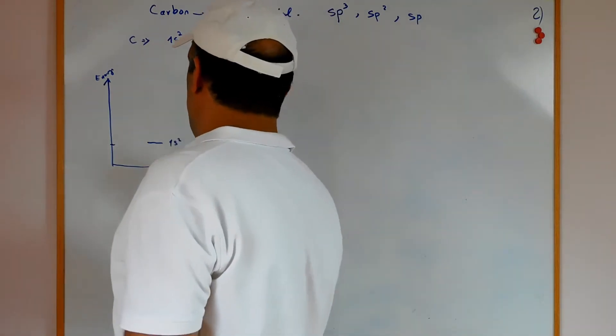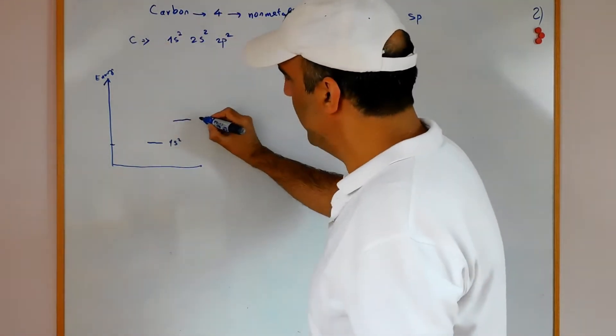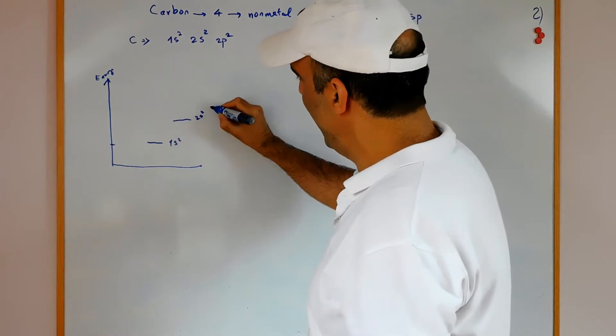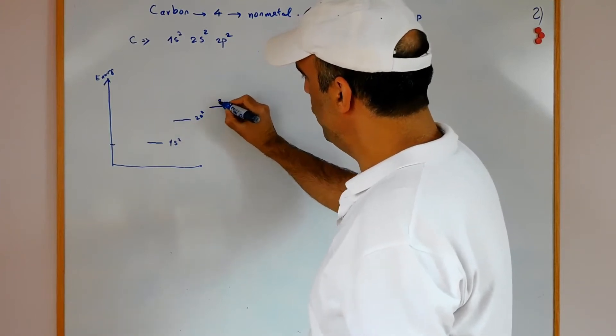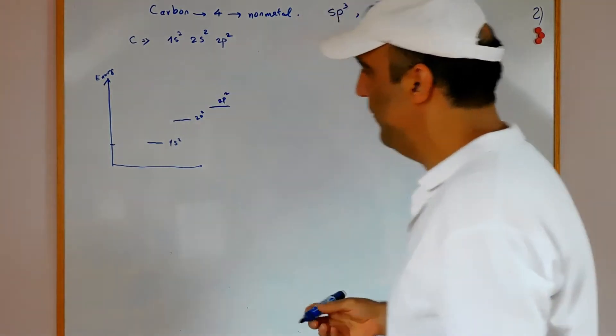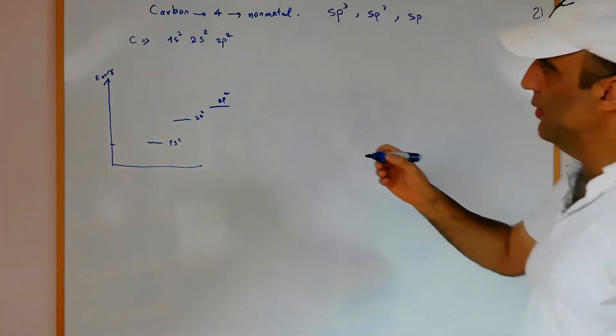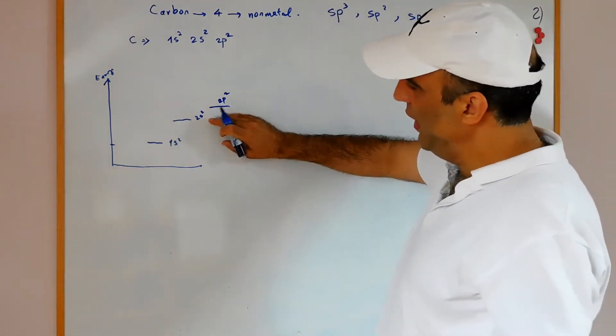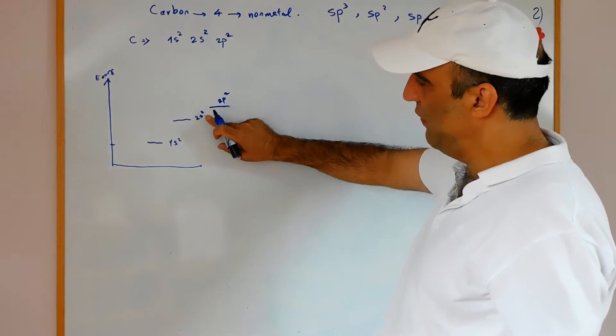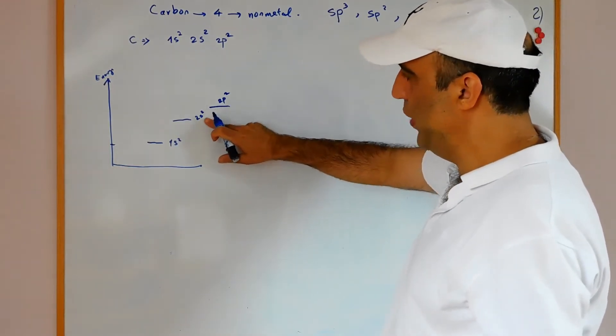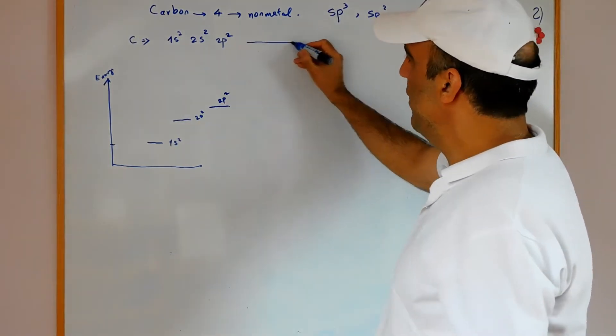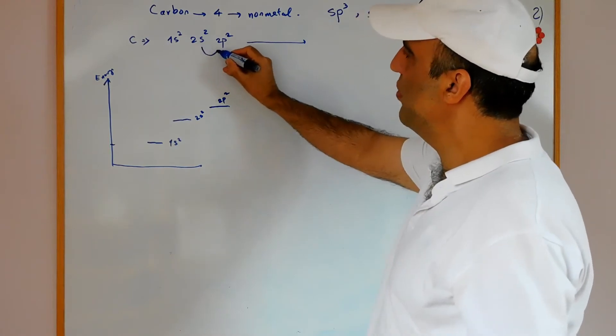Here is 1s2, here is 2s2, and a little higher is 2p2. There is very low difference between energy level of 2s and 2p. One electron can jump from 2s to 2p.